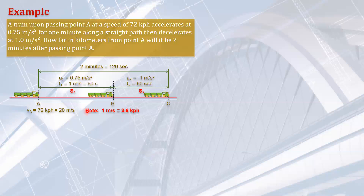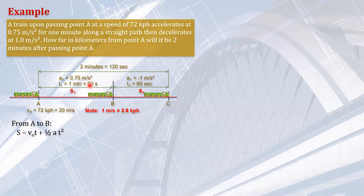This is a compound motion moving from A to B, then from B to C. Let's analyze first the motion from A to B. We can use the formula: S equals V₀t plus one-half at². The initial velocity is 20 meters per second, the time of travel is 60 seconds, and the acceleration is 0.75. Substituting these values, we can easily solve for S1, which gives us 2,550 meters.